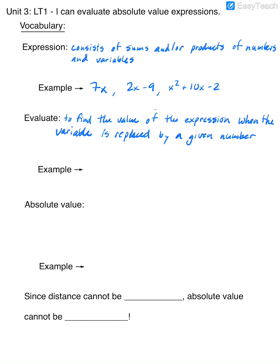On your notes, you're already starting with an example. Given that x equals negative 2, they want you to evaluate 4x plus 14 as your expression. So here, if I'm asked to evaluate, that means 4 times x — and since x is equal to negative 2, I need to plug that in. I'm going to replace x with the value of negative 2.